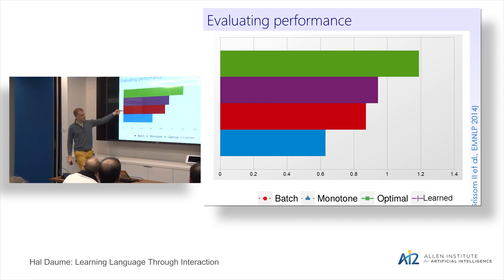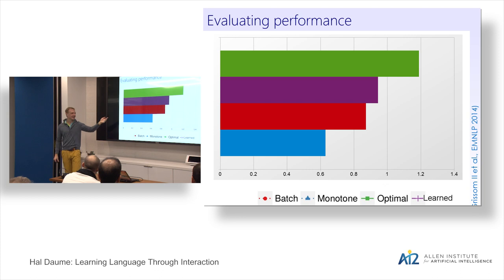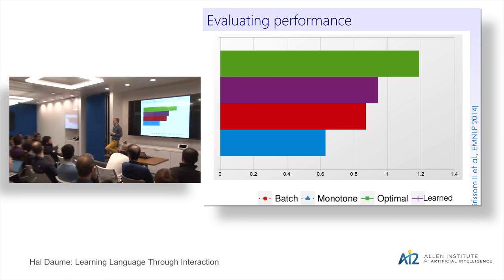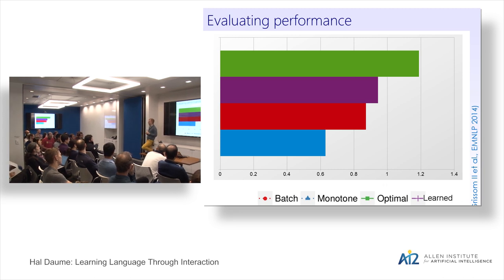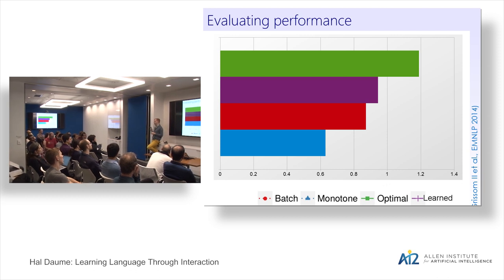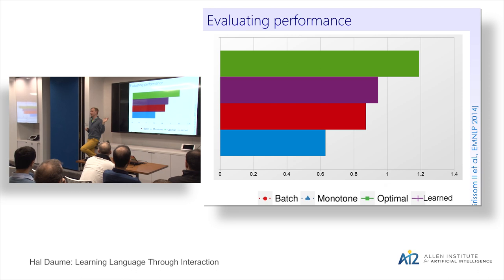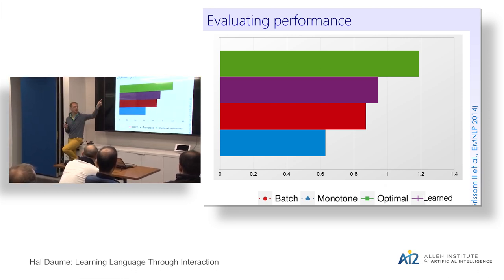The red bar is the batch system that waits until end of sentence — very high quality but very delayed. The blue bar is a monotone system that translates word by word — very simultaneous but low quality. The green bar is human interpreters — very good — and the purple bar is our system, falling somewhere between the baselines and humans. We're comparing two interpreters each with about 10 years of experience. The quality degradation from simultaneous vs. batch is quite noticeable — you could always tell which translation was from an interpreter versus a batch translator.